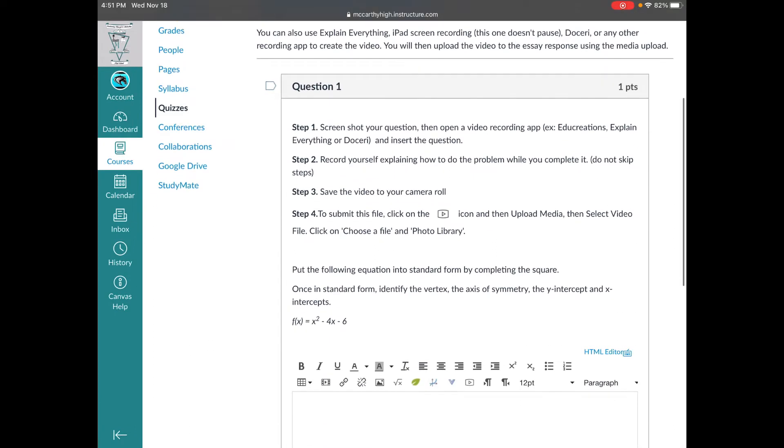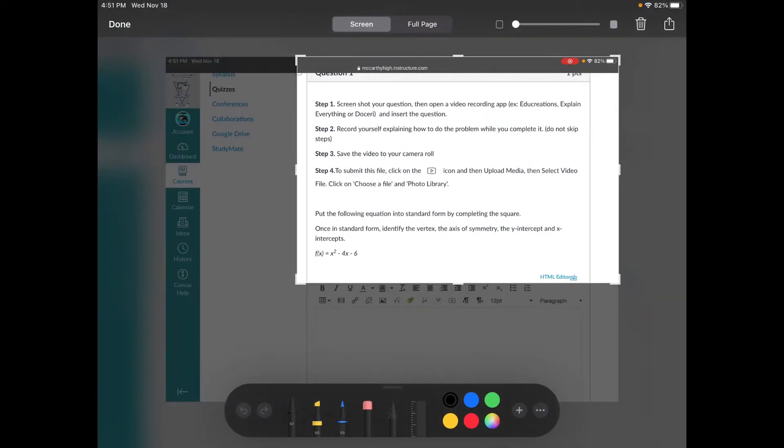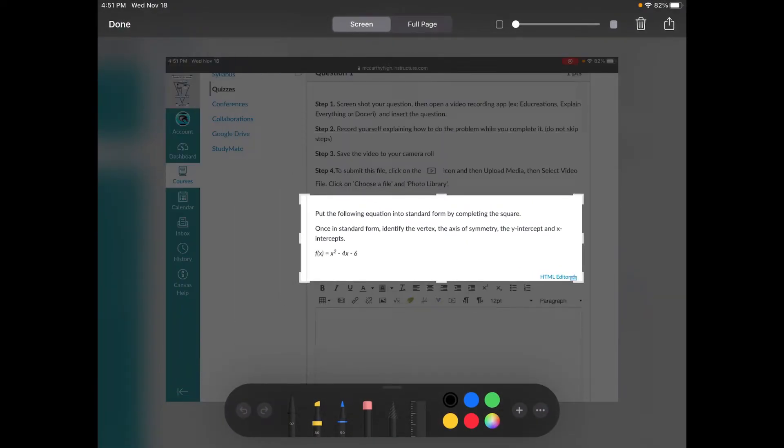It says screenshot your question, open the video recording app, record yourself explaining how to do the problem while you complete it, don't skip steps, and then save the video to your camera roll and submit it. So I'm going to screenshot this question. You can crop it if you want to, but I just really want just that equation.